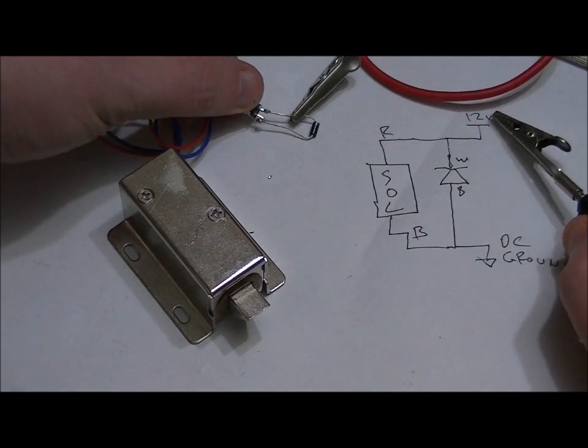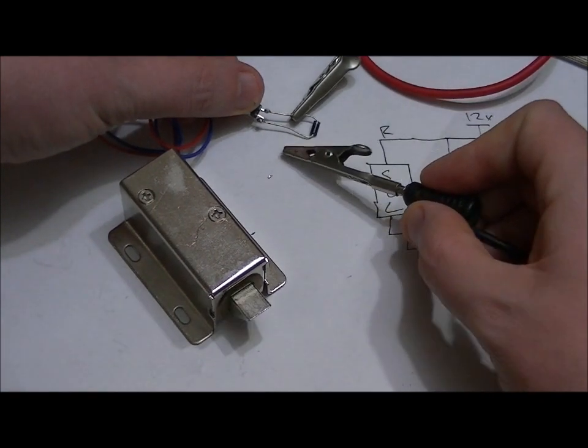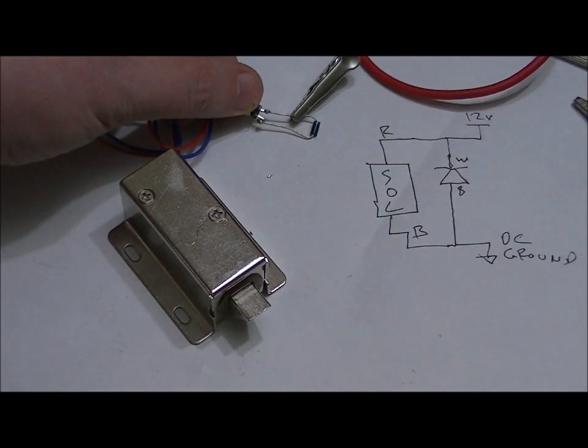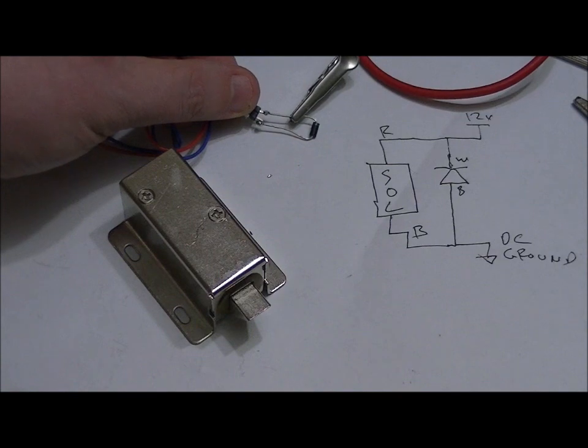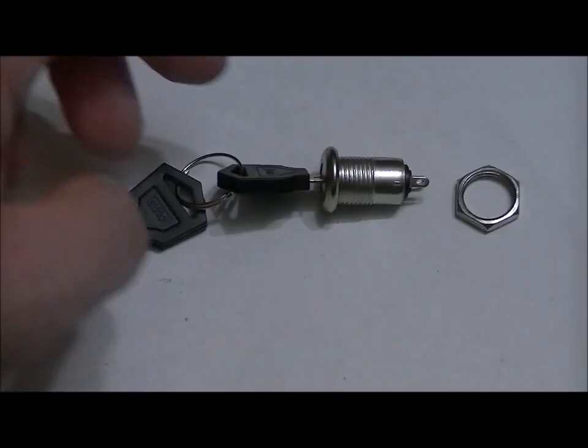So the diode just protects. That's all it does. And there you go. So obviously you put this into a circuit board. You could use a relay to drive it. You could use a transistor to drive it. But it's reliable, and it works every time.